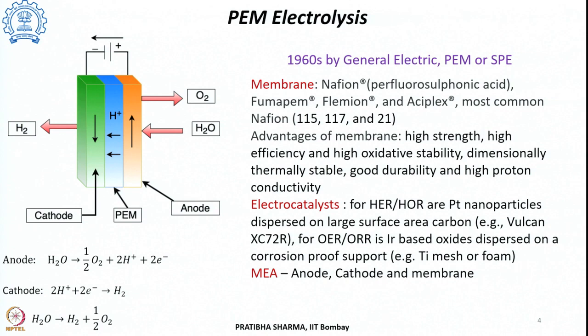The second electrolysis technology is polymer electrolyte membrane (PEM) or proton exchange membrane or solid polymer electrolysis. This technique was first commissioned by General Electric in the 1960s, although membrane-based technologies were used earlier in the 1950s. The process uses a polymeric membrane that selectively allows ions to flow through it.